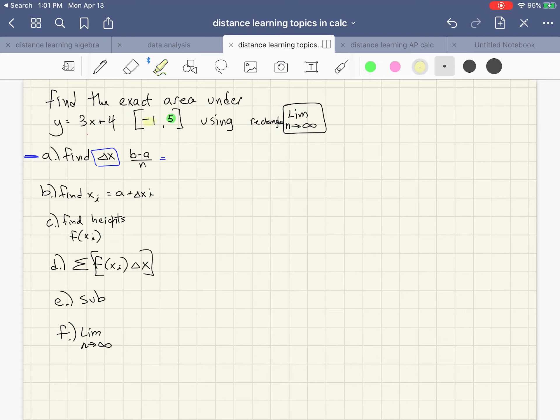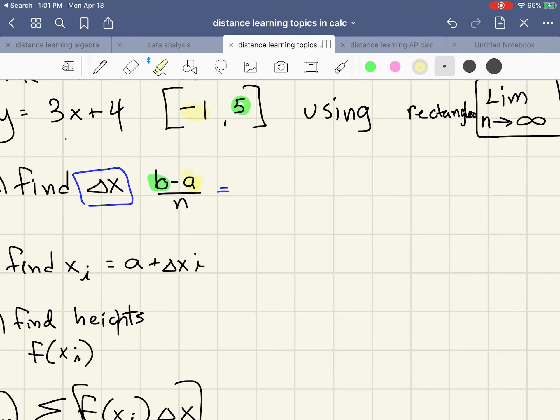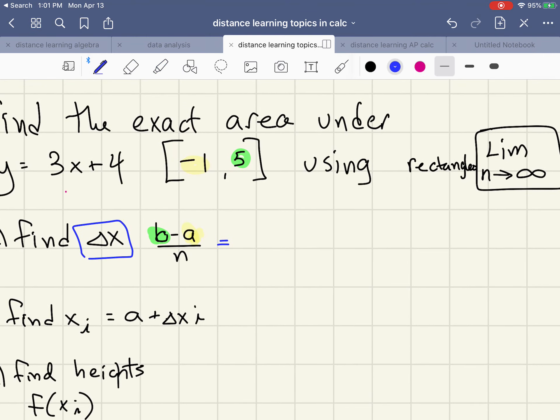We're going to take our b value, we're going to take our a value, we're going to plug them in here and our result is five minus a negative one over n which is really five plus one or six over n. So again to clarify if I was using six rectangles it would have a width of one each, however I'm eventually going to be using infinity so each rectangle is infinitely small.